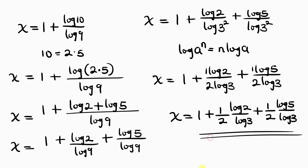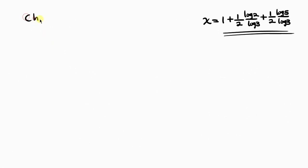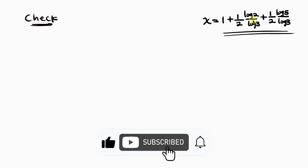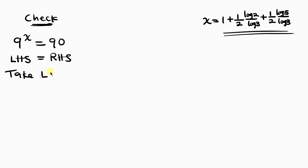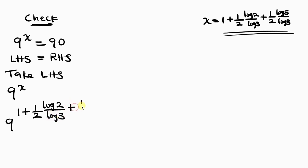Now let's go to the most important part of this exercise, and that is checking. This is our solution for x. The question given to us is 9 to the x equals 90. We want to check if the left-hand side will equal the right-hand side. So the left-hand side is 9 to the x, and we substitute the value of x: 9 to the power of 1 plus one-half log 2 over log 3 plus one-half log 5 over log 3.